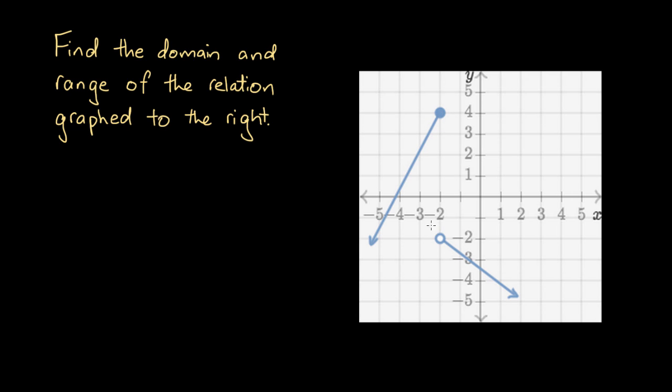This one has a hollow point and an arrow. The hollow point here represents that this point itself is not a part of this line, but the line that extends from it, all those points are part of the relation, just not this hollow point.